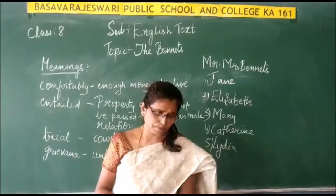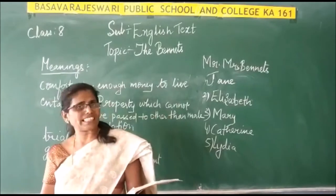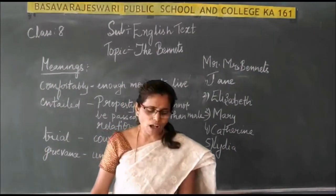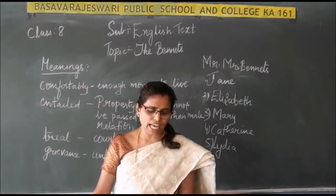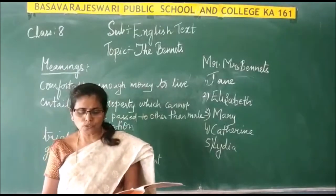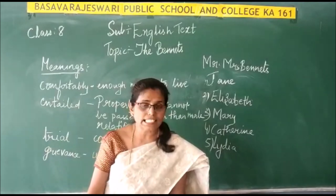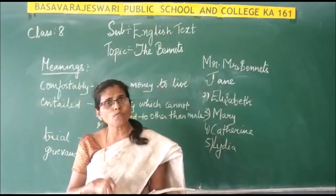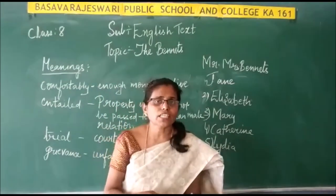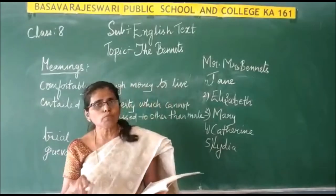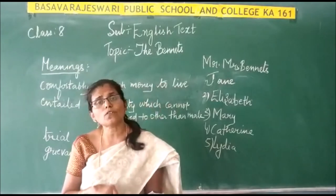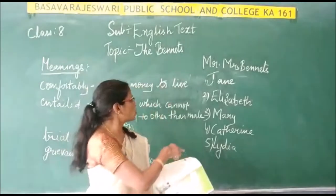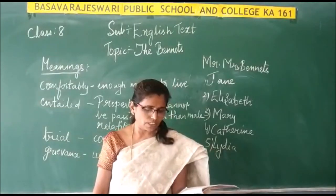So if the girls wanted to settle their lives and if Mr. Bennett died, that property would immediately go to the nearest cousin. The fine house in which they lived and the farm which gave Mr. Bennett his income would both, on his death, pass on to Mr. Collins — a distant cousin, the nearest male relative. The fine house and the farm that provided their income would go to Mr. Collins.